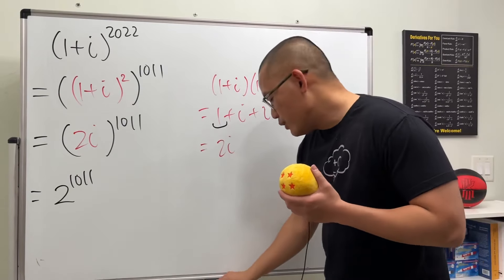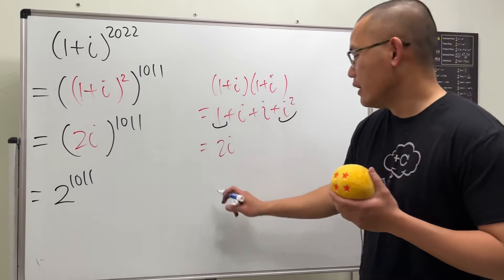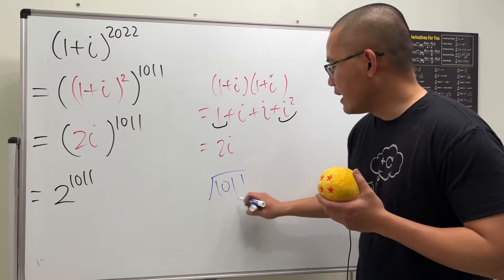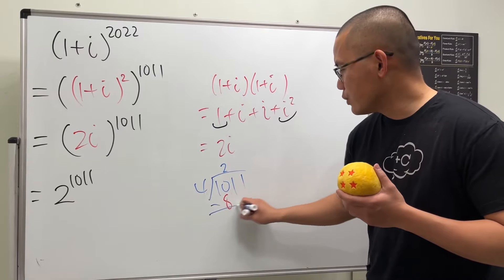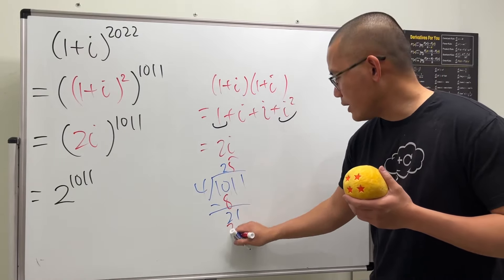And then now for the i to the 1011, what we will do is just divide by 4. So 1011 divided by 4, we see that this is going to be 2, and then we will get 8, and then we minus, we get 2, and then 1, 5.